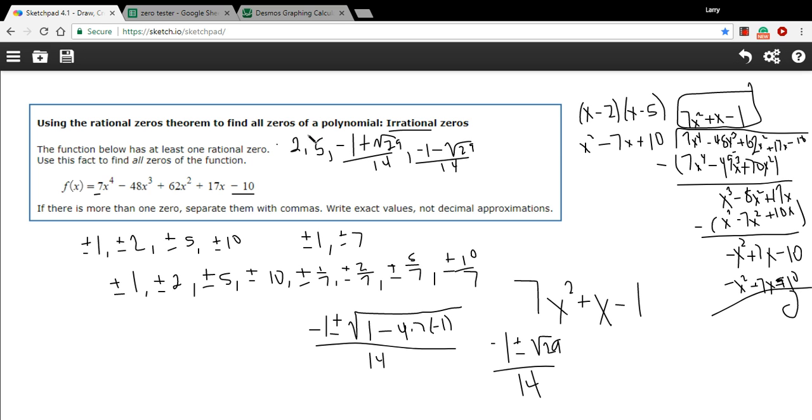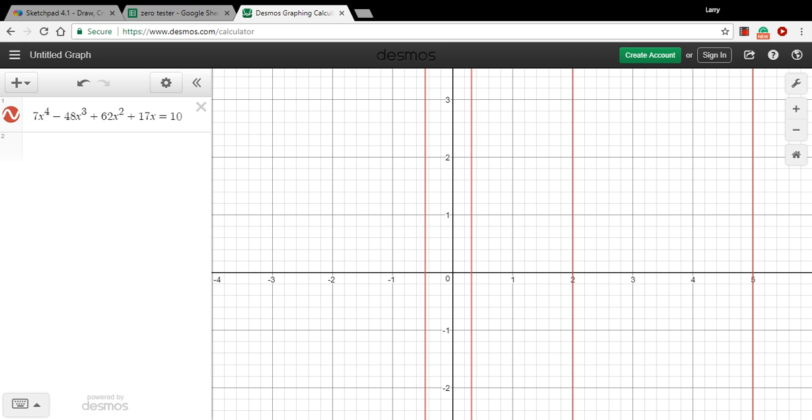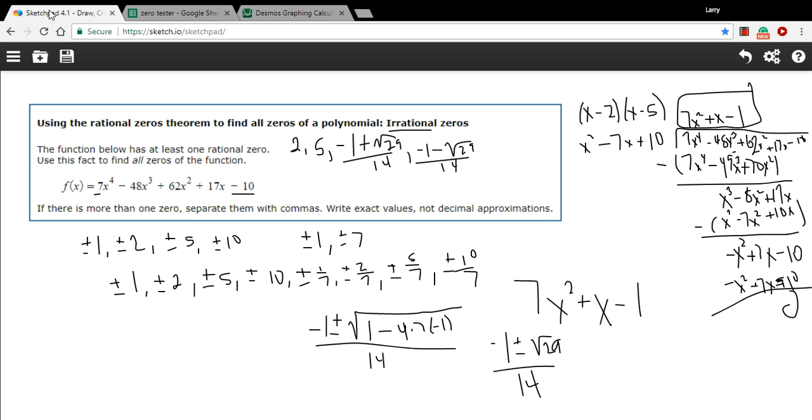So this is a lot of work. And it's probably a good idea to check your work using a graphing calculator. And so what I've done here is I've just punched in the function. And we can see we did get 5. We did get 2. That value negative 1 plus or minus the square root of 29 over 14. You can crunch those out on your calculator if you want to. But I guarantee these are the values that you're seeing right here on this graph. So that is some work with finding all of the zeros, including some irrational zeros of a fourth degree polynomial.